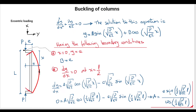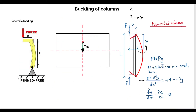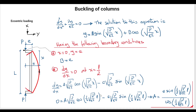Substituting these boundary conditions and taking B equals e, after various mathematical manipulation, we find that A equals the term shown in the derivation. Please go step by step through the mathematical derivation — it's interesting and not complicated. Remember, we are talking about a pin-ended column here. If you have a free-fixed or fixed-fixed condition, the boundary conditions change, but the same underlying concepts apply to find the constants.